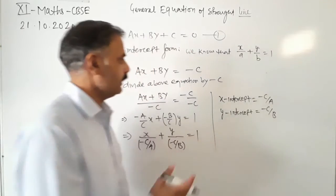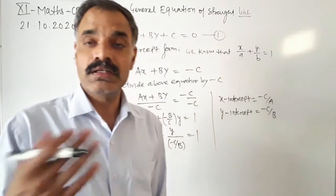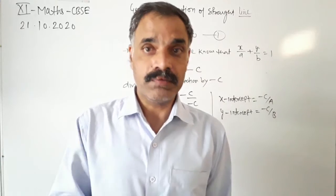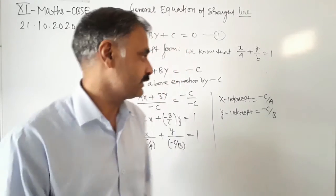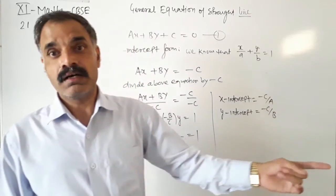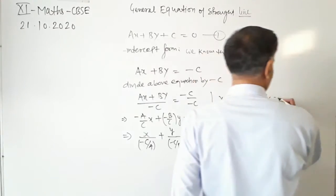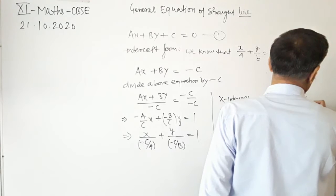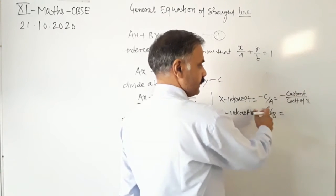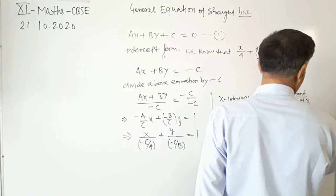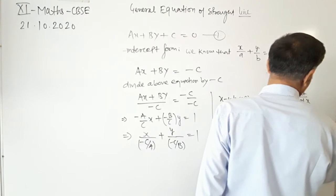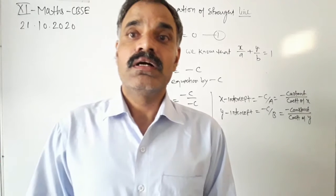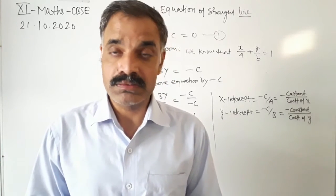In this way we can convert the given general equation of the line in intercept form, or we can find the X intercept and Y intercept. The X intercept is minus C upon A, that is minus constant upon coefficient of X. And the Y intercept is minus C upon B, that is minus constant upon coefficient of Y. Using this formula, we can find the intercept either on the X axis or on the Y axis from the general equation of the line.